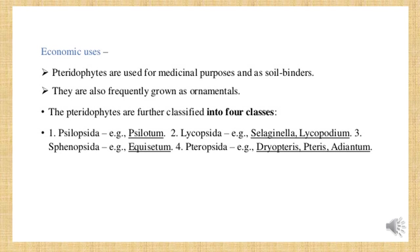Pteridophytes are further divided into four classes. First is Psilopsida, example Psilotum. Second is Lycopsida, example Lycopodium — which is also used as a homeopathic medicine to cure some types of diseases. Third is Sphenopsida, example Equisetum. Fourth is Pteropsida, with examples such as ferns, Adiantum, and Dryopteris.